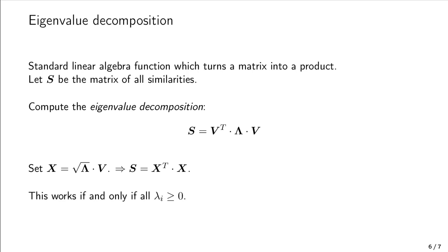If lambda is positive or zero, we can draw our distances. But if any entry of lambda is negative, drawing is impossible. At least in the real numbers. Let's recap.